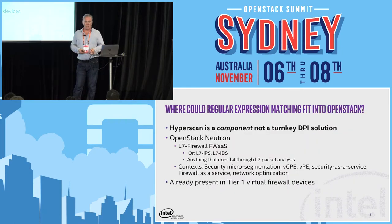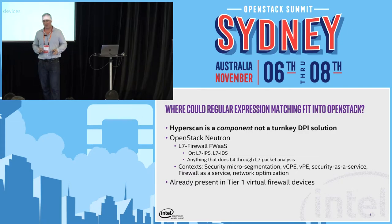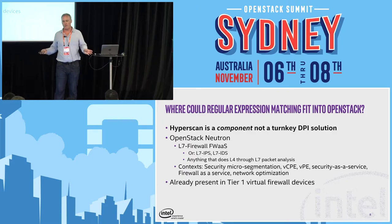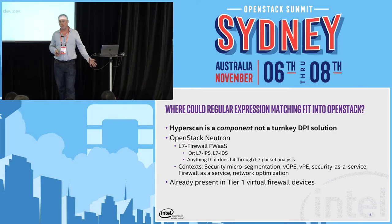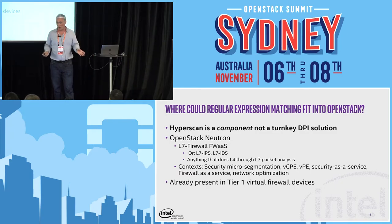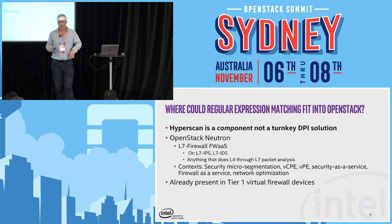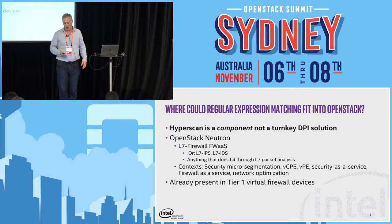So where would this fit into OpenStack? Hyperscan is a component — it's a regular expression matching library. I always get a little embarrassed to say it's not a DPI solution, because you build DPI solutions on it, but it doesn't do all the DPI for you. So it's a required component of a DPI solution. OpenStack Neutron would be an ideal framework in which to build it. You'd be talking about people building firewall-as-a-service applications, layer seven IDS/IPS, anything looking at packets on the wire all the way up to application traffic, from L4 through to L7. We're already present in a number of tier-one firewall devices.